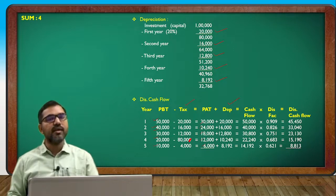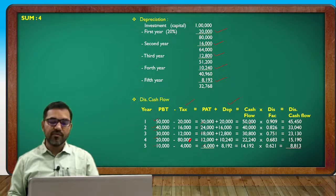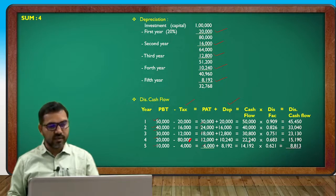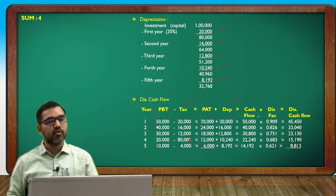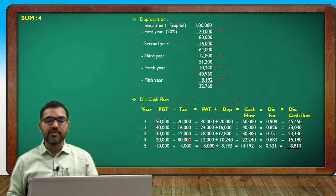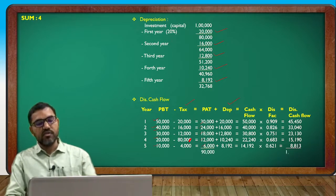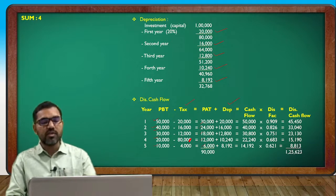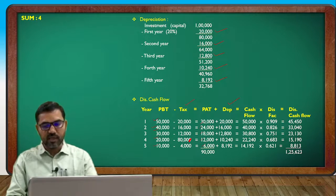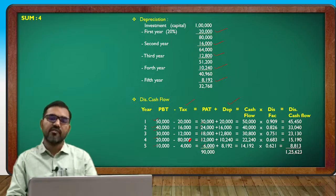The method used is WDV — Written Down Value method. So the cash flows are: 50,000; 40,000; 30,000; 30,800; 22,240; and 14,192. This discount factor is then multiplied to get the discounted cash flow. Total profit after tax is 90,000 and total discounted cash flow is 1,25,623.